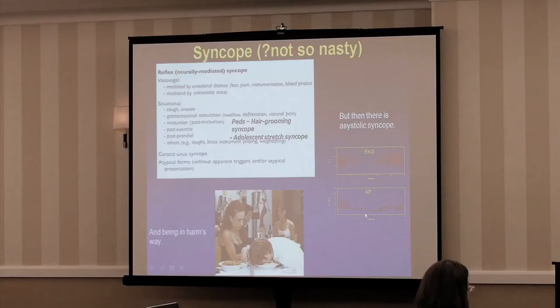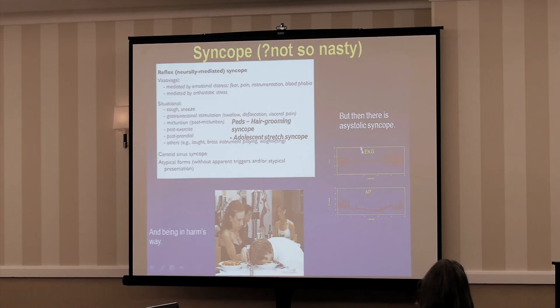More famous now is so-called asystolic syncope — a variant of simple vasovagal syncope in which the heart stops. It's punctuated, you're supposed to recover from it, it's usually extremely abrupt, fairly frequent, and they almost always hurt themselves. But they usually recover. Nowadays in adults the literature is highly supportive of putting in a pacemaker — not because they'll die without it, but so they won't hurt themselves and episodes will come down.